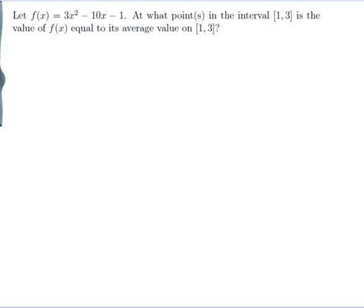Let f be equal to 3x squared minus 10x minus 1. At what point in the interval is the value of f equal to its average value on [1, 3]?